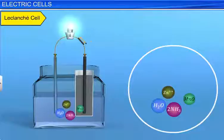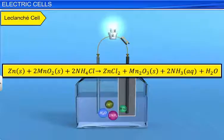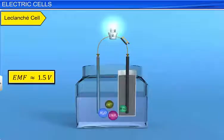The overall chemical reaction in the functioning of the cell is as shown here. The EMF produced by a Leclanche cell is of the order of 1.5 volts. It is not suitable for maintaining a steady current over a long time.